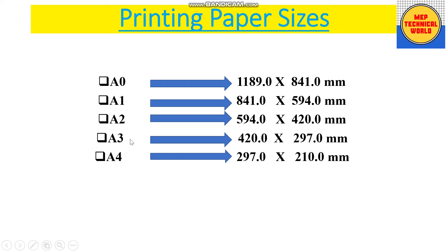Now let's talk about printing paper sizes. A0, A1, A2, A3, and A4 are the types of printing paper. The dimensions are: A0 — length 1189 mm, width 841 mm. A1 — length 841 mm, width 594 mm. A2 — length 594 mm, width 420 mm. A3 — length 420 mm, width 297 mm. A4 — length 297 mm, width 210 mm.